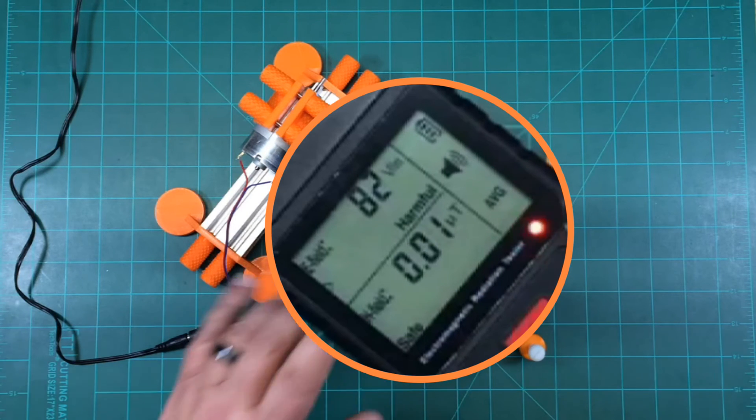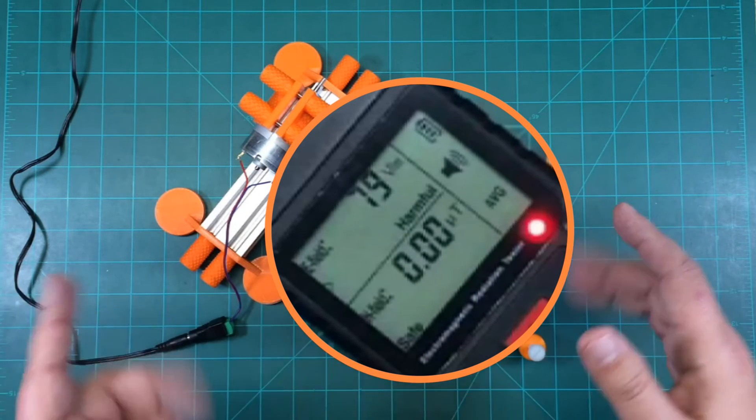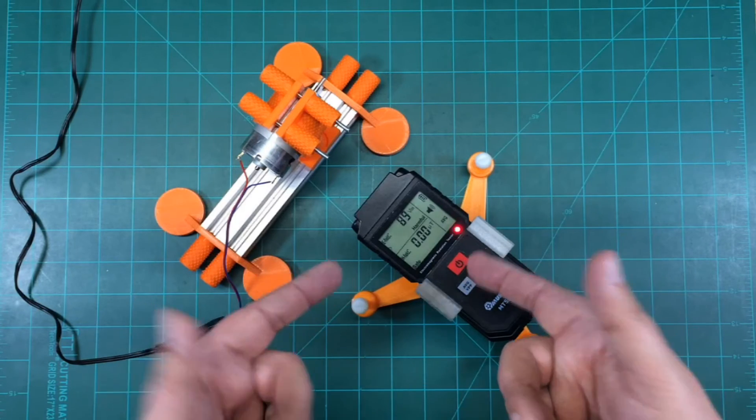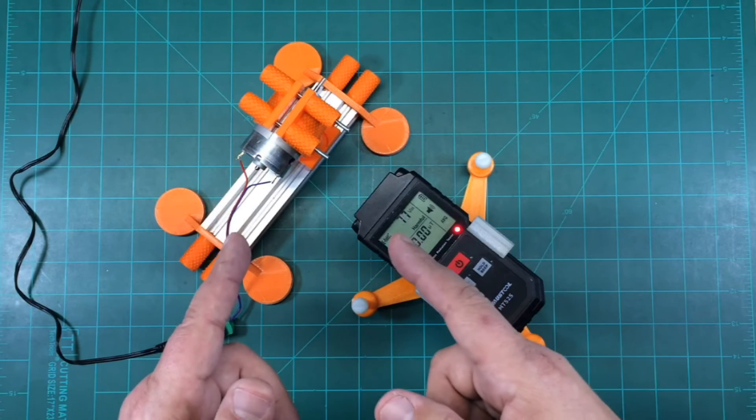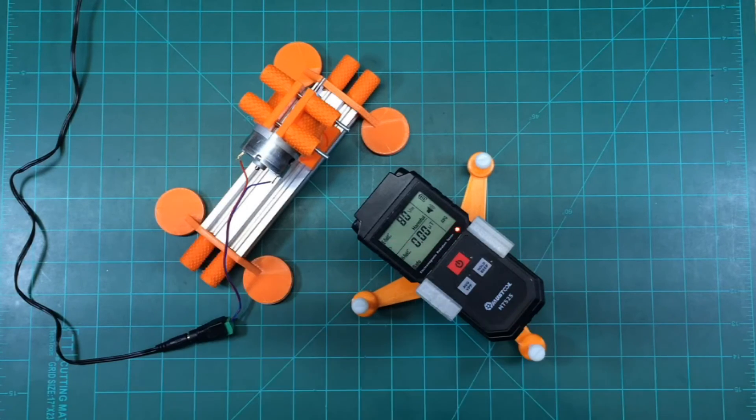Now this is the important one. So we have our baseline set with the flux ring. So I tell you what, let's take a little break. I'm going to remove the flux ring, and then we're going to test it without. Let's jump over there.